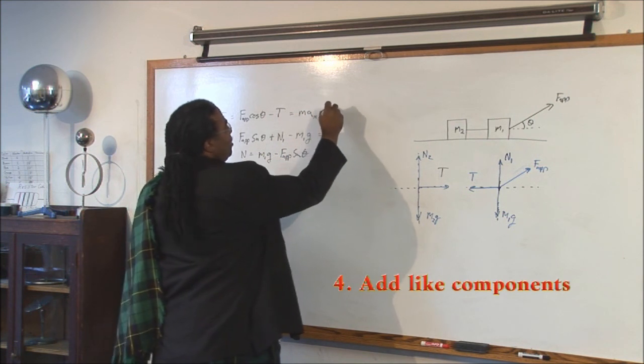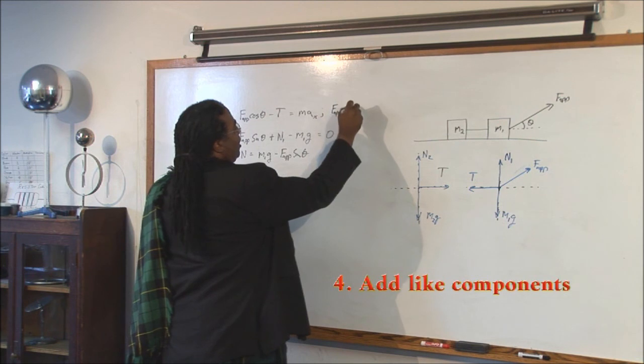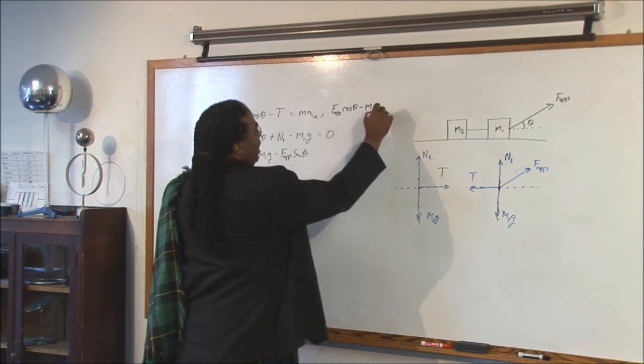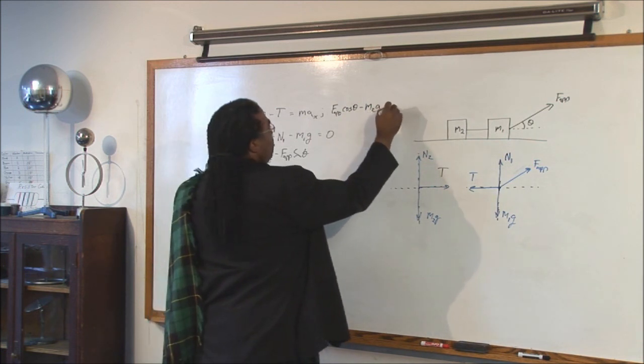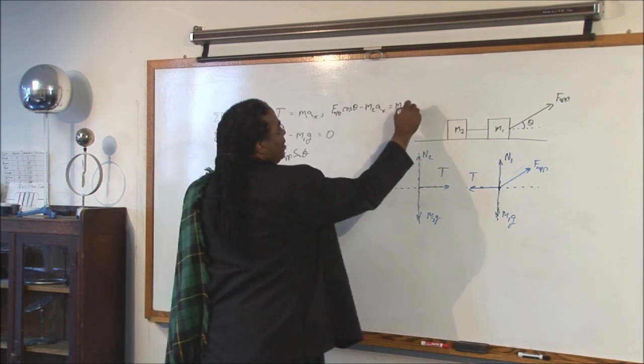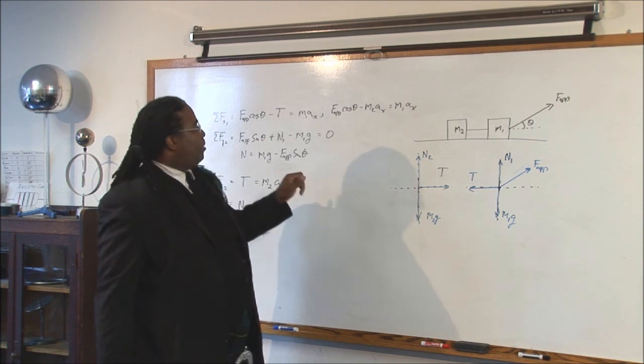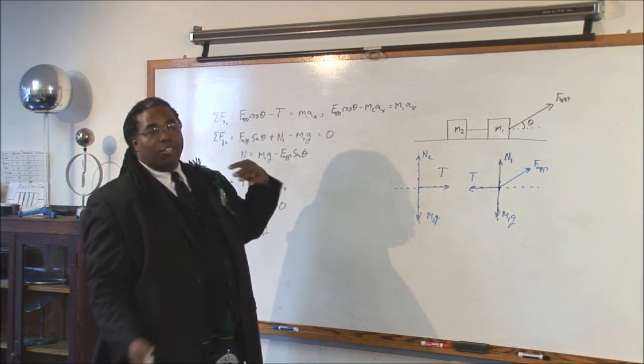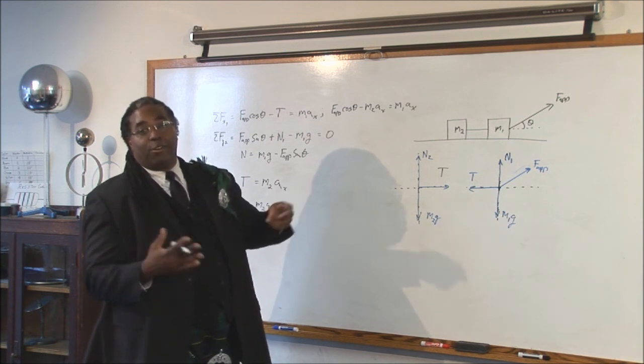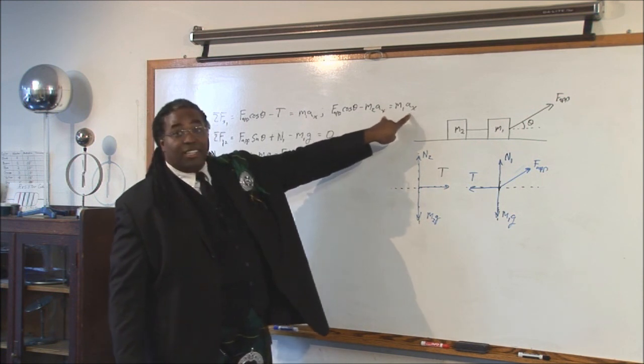That becomes F applied cosine theta minus M two a sub x which equals M one, I forgot to put my one there, a sub x. Remember, so now we've done step four by the way, we added like components. We're doing the substituting so we can get to step five which is find the resultant or the equation of motion. So our equation of motion will be an equation that solves for the motion which is the acceleration.